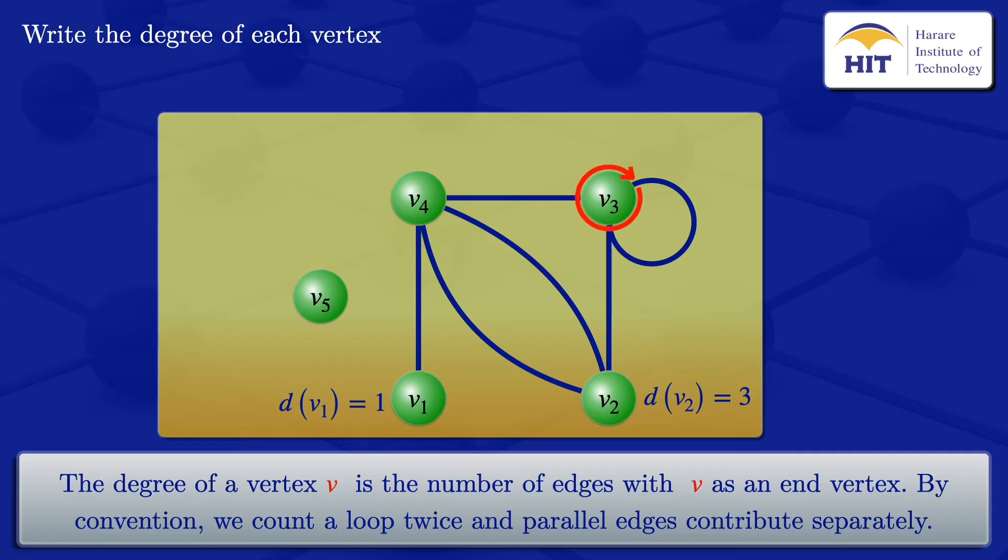Now move on to vertex V3. It is an end vertex for these two edges in addition to this loop. A loop we count twice. So for the degree, it will be the two edges plus two for the loop, so it will be 4. So we have the degree of V3 is equal to 4.